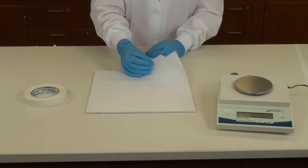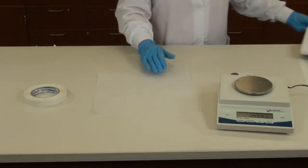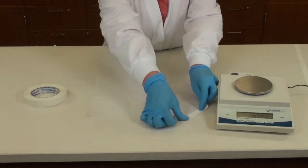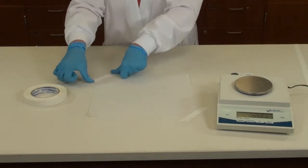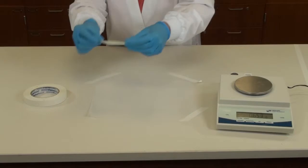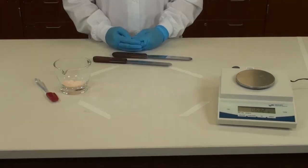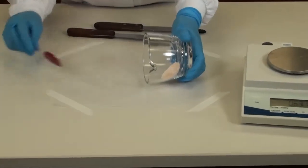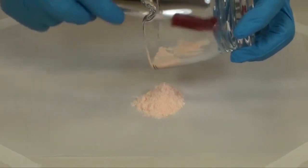Now get a piece of ointment paper and tape it firmly down onto the work surface. You are now ready to place the powder onto your ointment paper. Use a rubber spatula to retrieve all the powder from the mortar.